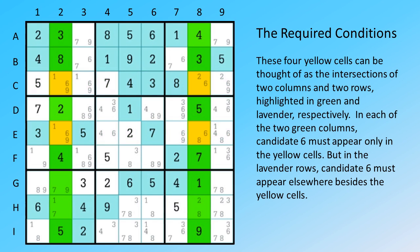In each of the two green columns, candidate six must appear only in the yellow cells. But in the lavender rows, candidate six must appear elsewhere besides the yellow cells.